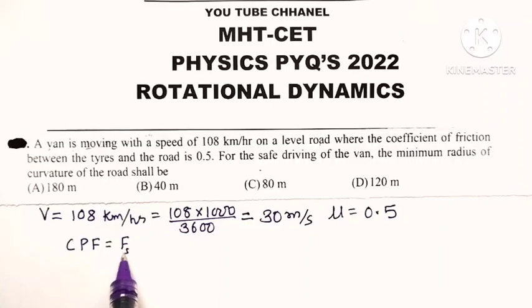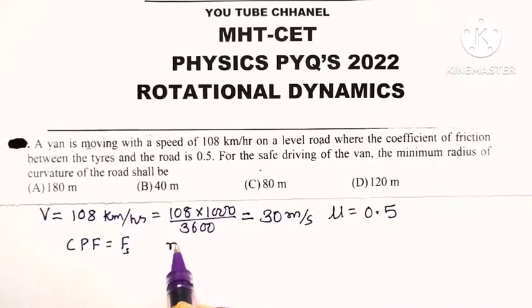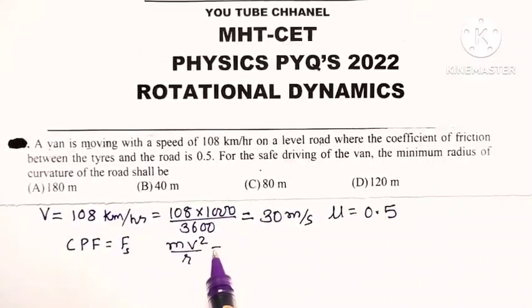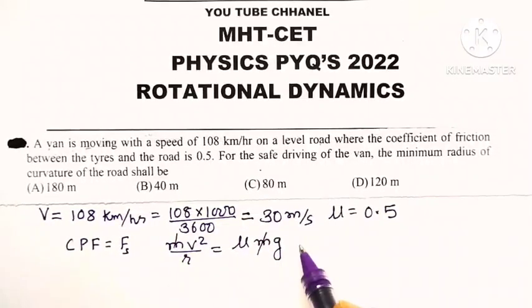Force due to friction is μ times mg. So m on both sides get cancelled, and we have r equals v² divided by μg, where r represents the minimum radius of curvature.